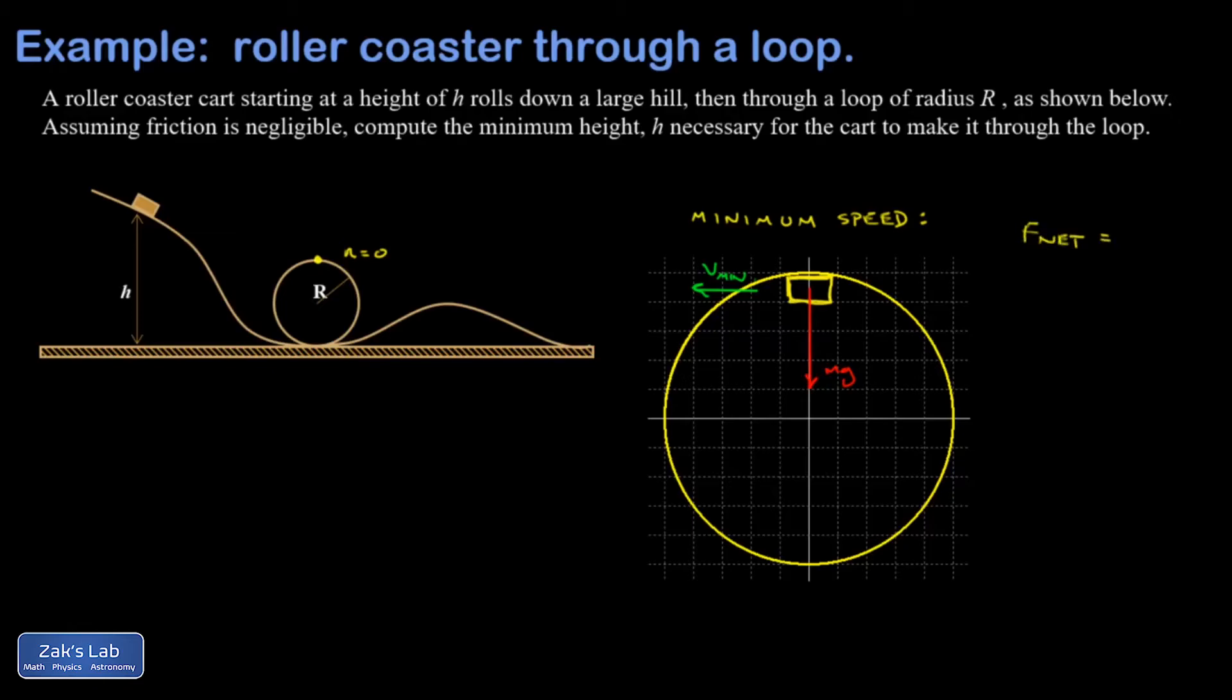F net equals ma. And my net force is just mg pointed down. I'm using downward as my positive direction because that's the way a points equals mv squared over r. And the masses cancel out, and I find out that my velocity here, and I'll call it V min because it corresponds to the normal force being zero, is going to be the square root of gr. And it was a capital R in the original problem, so I changed it to that for this answer.